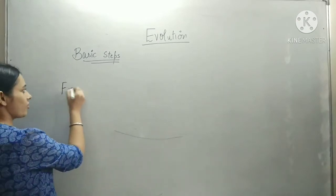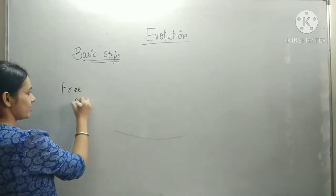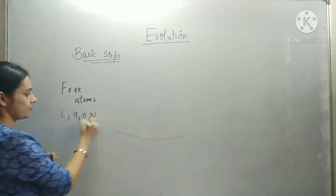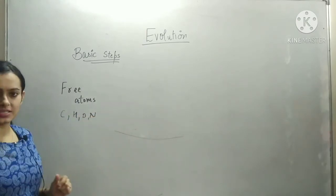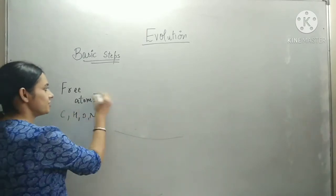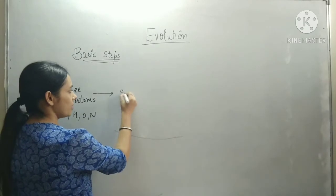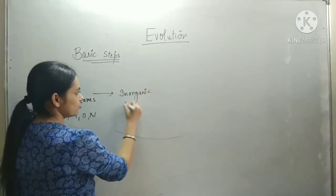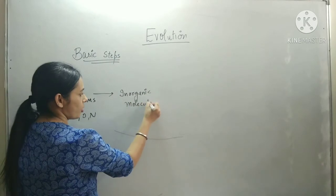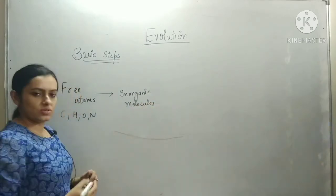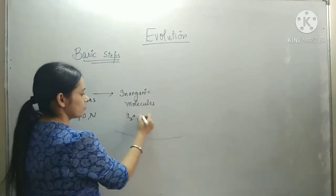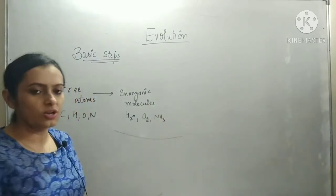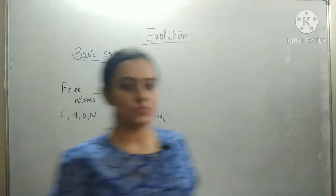In nature we already have different free atoms like C, H, O, N. Generally, the free atoms combine to form inorganic molecules. Inorganic molecules are those which are not carbon compounds. Different examples we can take are water, oxygen, ammonia, etc. Inorganic molecules are present in different parts of nature.